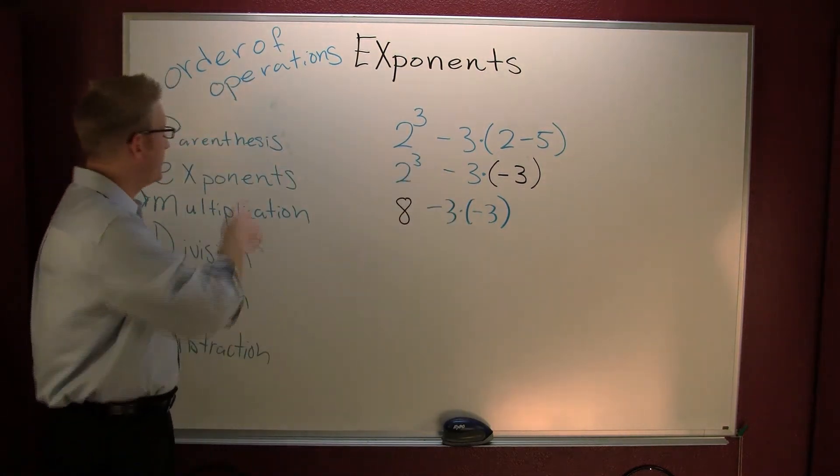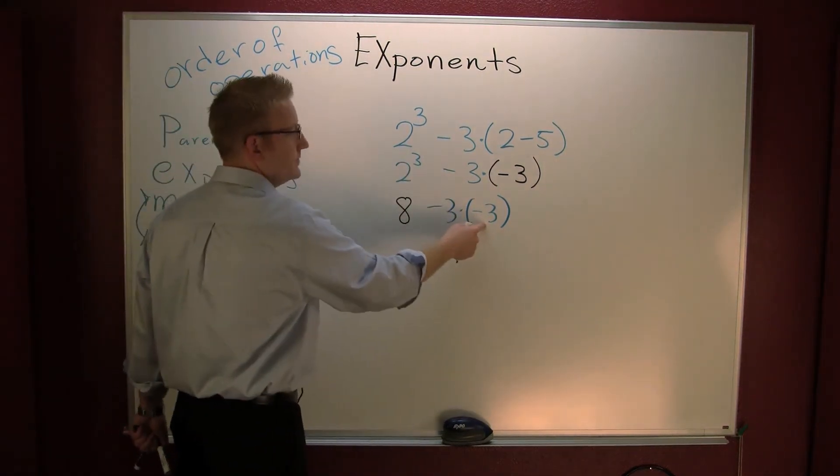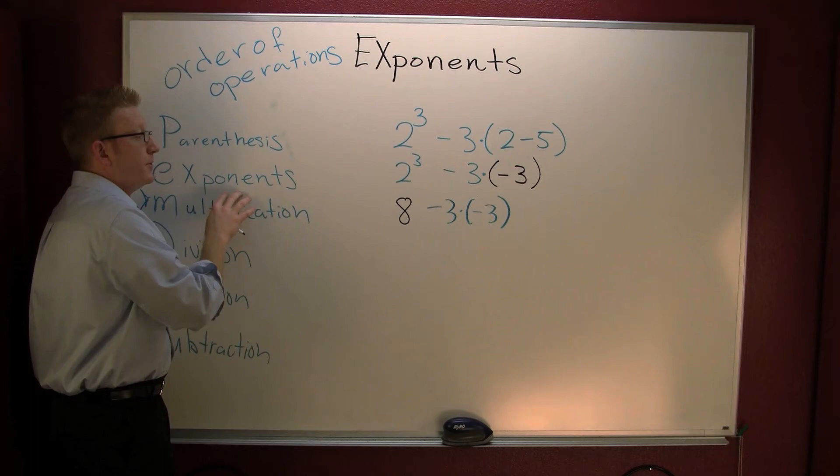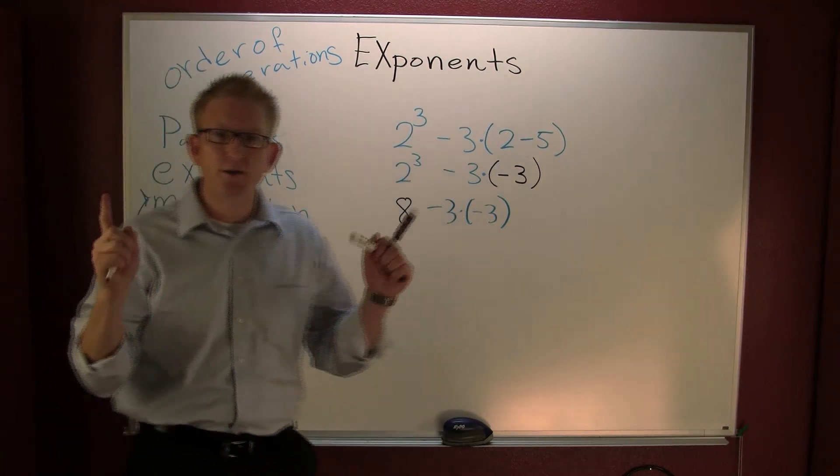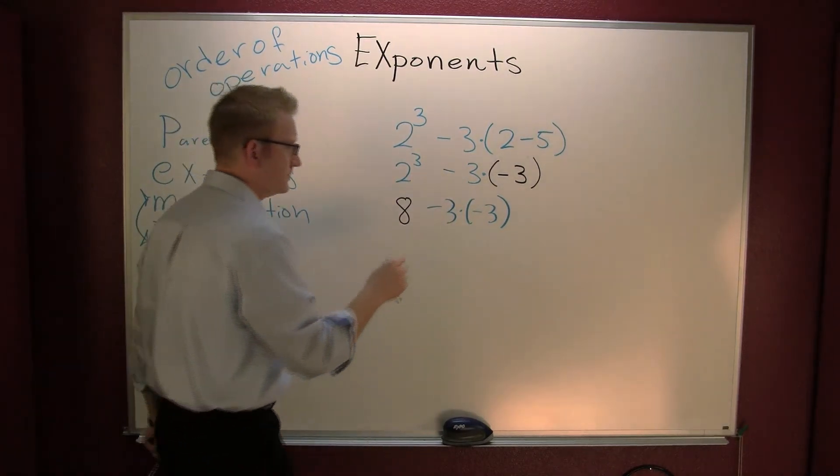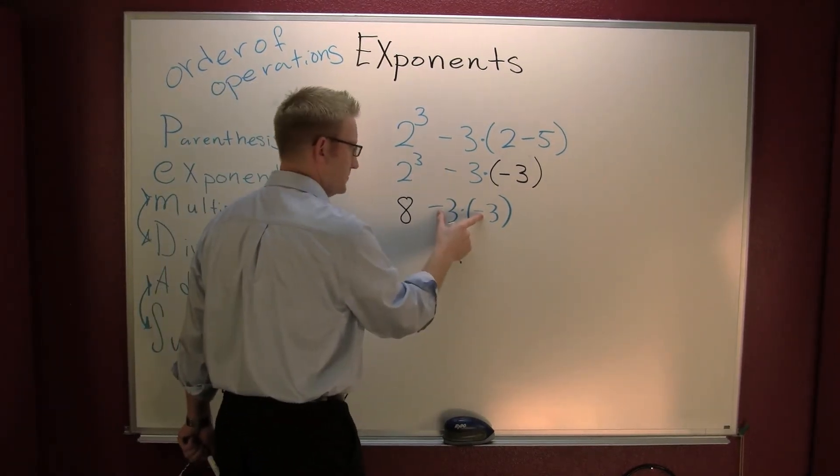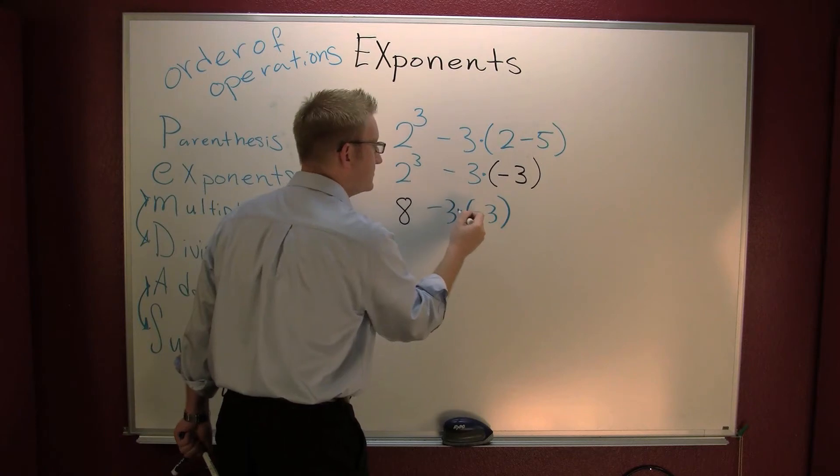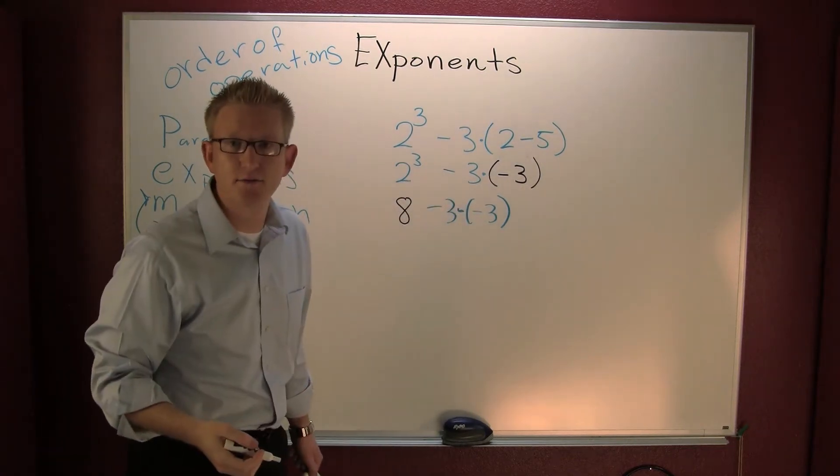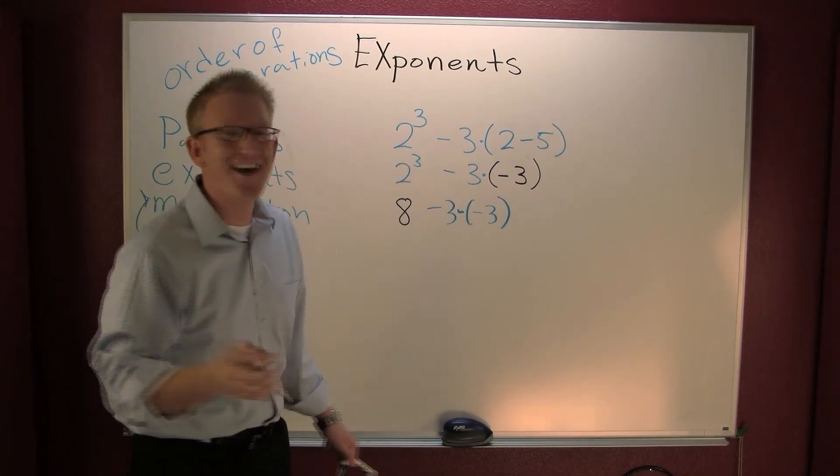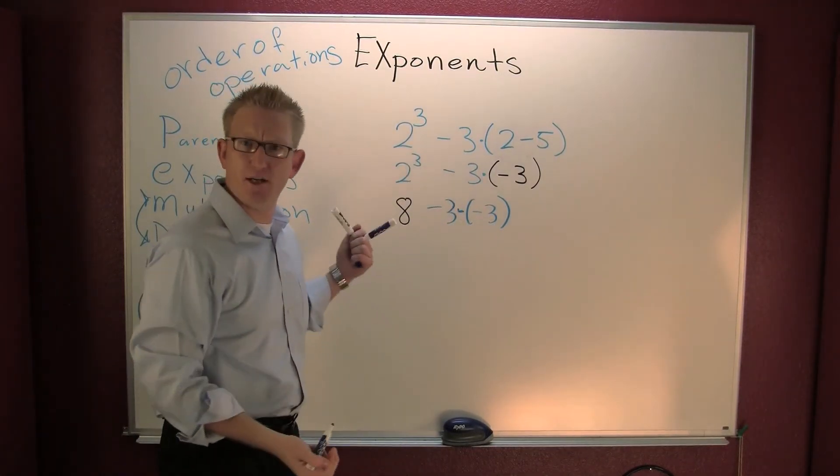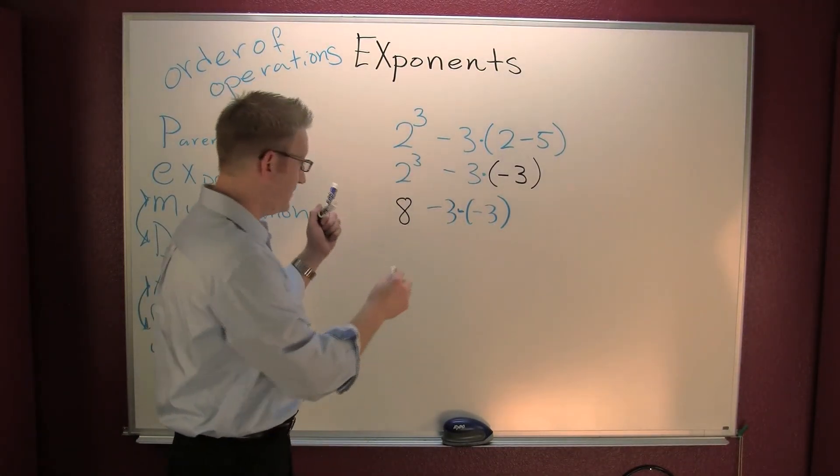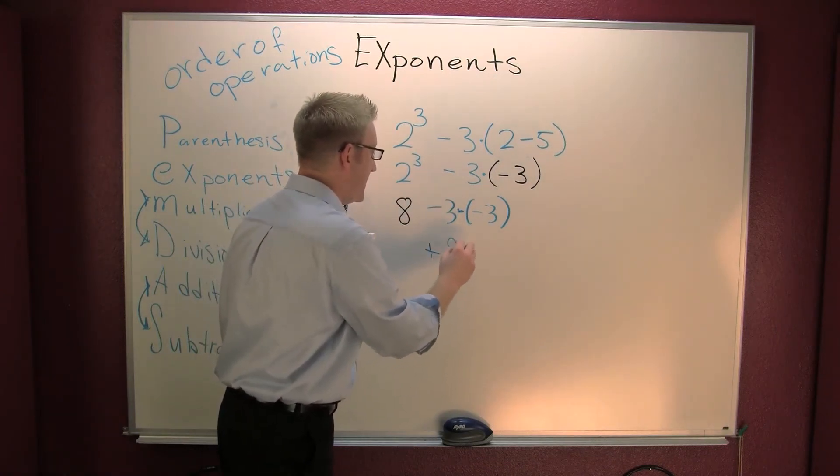So then what do we take care of now? Parentheses. We go inside. Is there anything we can do? No. Exponents. Took care of them. Now we're down to multiplication. It appears that we have some. Do those have the same sign? No. Yes. No. Yes. Which is it? No or yes? Yes. That's a minus three times a minus three. So it's going to be a positive nine. Fine. Plus nine.